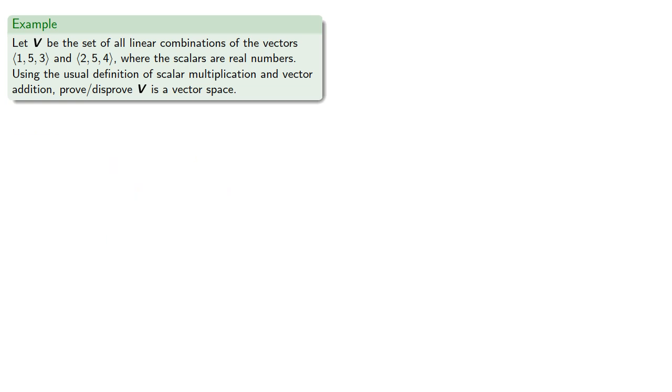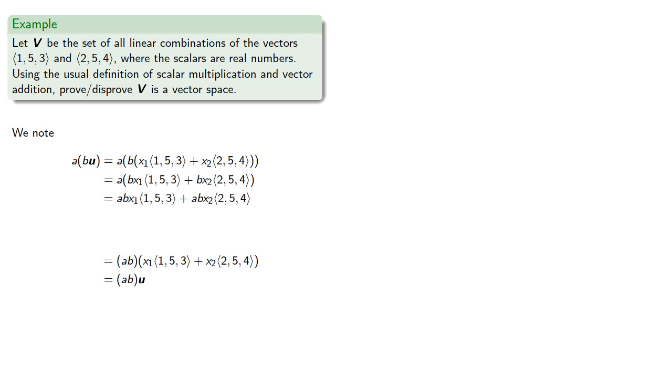We can also find associativity of scalar multiplication. It's helpful to think about where we start and where we want to end. We can build this from both ends if we use our definitions. Remember, u was a linear combination of (1, 5, 3) and (2, 5, 4), so we can back up a step and also go forward a step. On the right-hand side, we're working one layer down, so we can expand. Now to get from the third line to the next line, we note that if we remove a common factor of av, we get that fourth line, so we can conclude that scalar multiplication is associative.